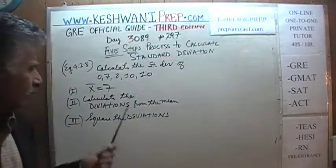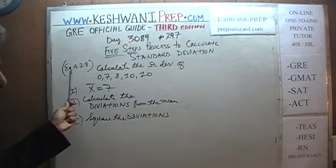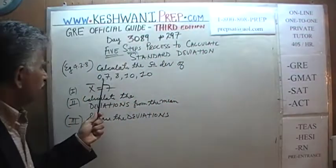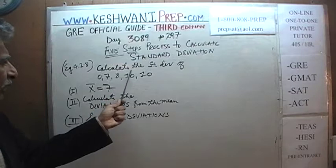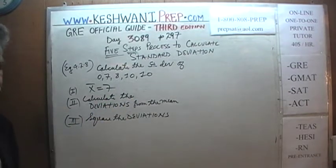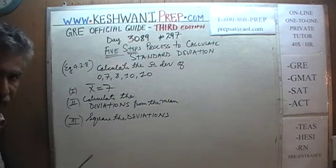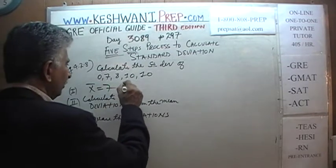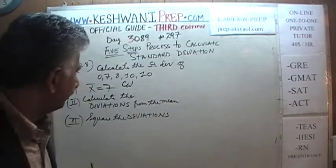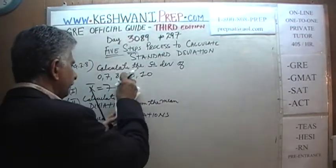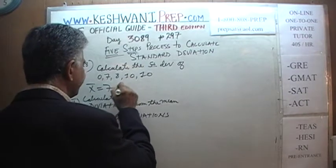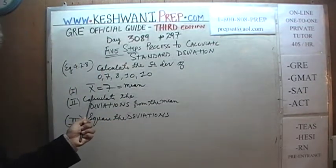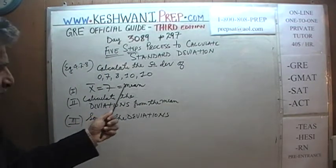Here is the sort of problem we are talking about. Turn to page number 297, example 4.2.8. There we are given five observations and asked to calculate the standard deviation. Step number one: we have to calculate the mean. I have done so already ahead of time — the mean is 7, which you can very clearly see here.